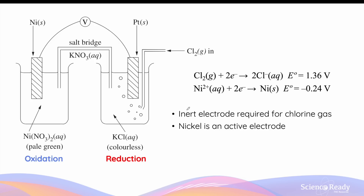Let's look at an example whereby an inert electrode is used. Here we have the oxidation half cell, whereby the nickel active electrode undergoes oxidation to form more nickel ions in solution. In the reduction half cell, we have chlorine gas molecules gaining electrons to form more chloride ions in solution. The reduction reaction contains chlorine gas and aqueous chloride ions, neither of which are good conductors of electricity. So in order for the chlorine gas molecules to gain electrons from the anode — which is the nickel electrode — we need to submerge a piece of inert electrode such as platinum into the solution where the chlorine gas is being pumped.